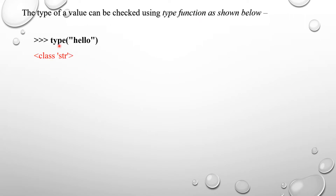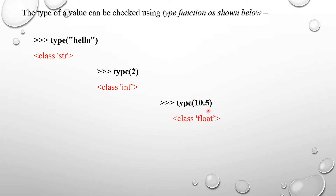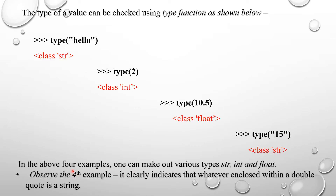The type of a value can be checked by using the type() function. For example, type('hello') returns string, type(2) returns integer, type(10.5) returns float. Note that type('15') — where 15 is within double quotes — returns string. Whatever is enclosed within double quotes is a string, so here string values are 'hello' and '15', integer is 2, and float is 10.5.